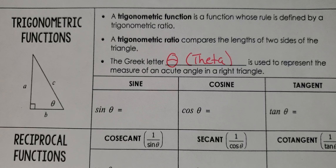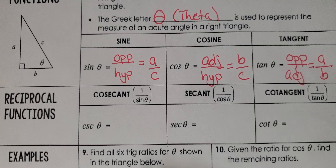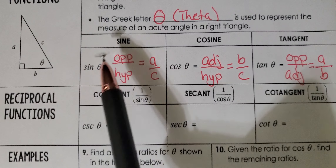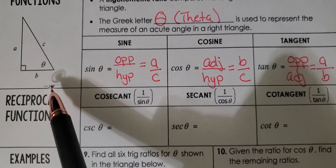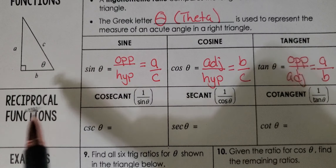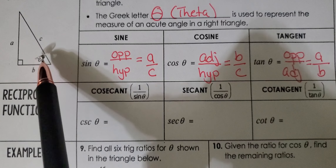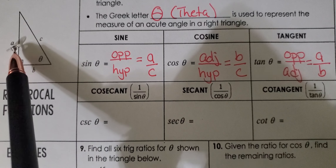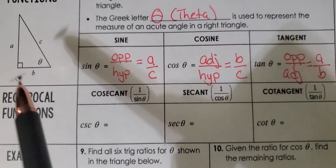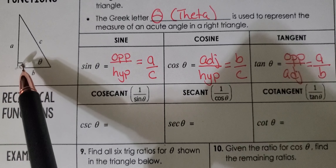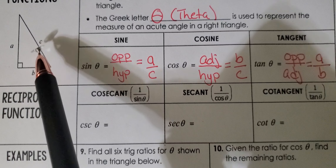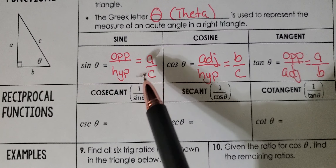The Greek letter theta is used to represent the measure of an acute angle in a right triangle. If we look at this particular triangle and we wanted to find the sine of angle theta, the sine is going to be the opposite over the hypotenuse. If the angle is here, the opposite is the side diagonally across from that angle, labeled A, and the hypotenuse is always the side diagonally across from the right angle. So sine theta equals A over C.